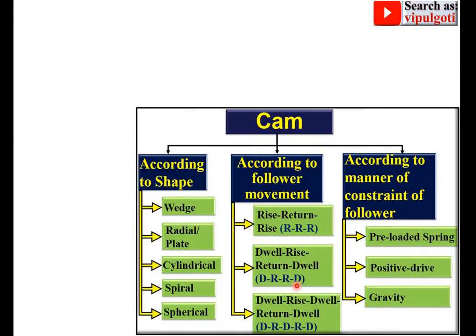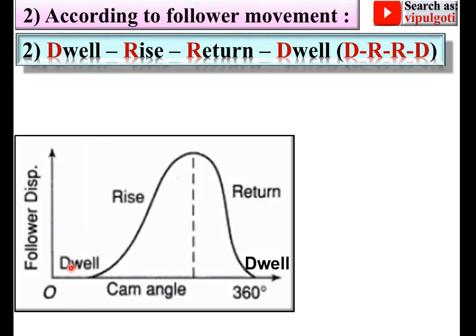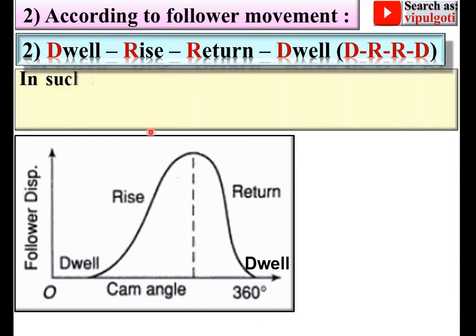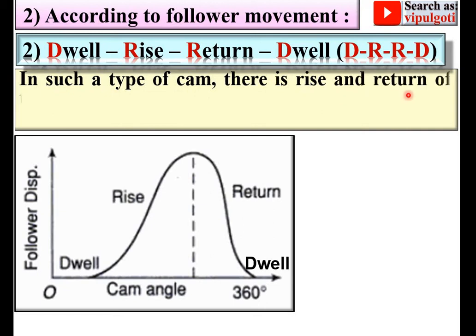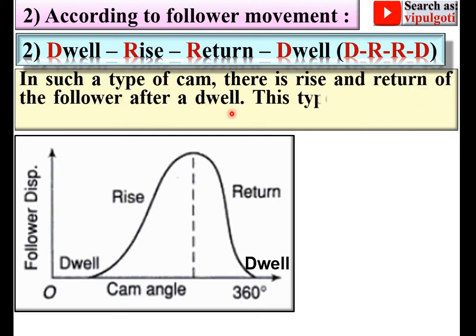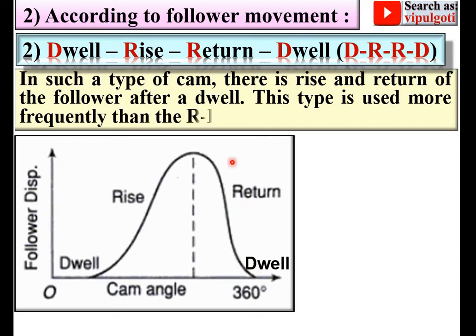Next is the DRRD type cam — Dwell-Rise-Return-Dwell. In this type of cam, there is rise and return of the follower after a dwell. Here you can see there is a dwell period in between.